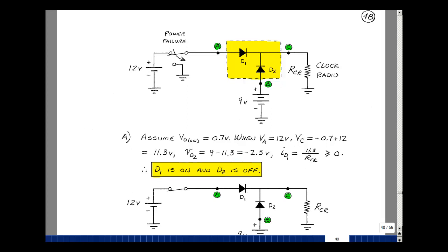And current would flow this way into the clock radio and then back. So that part of it works. D1 is on and D2 is off when I have power applied to the clock radio.